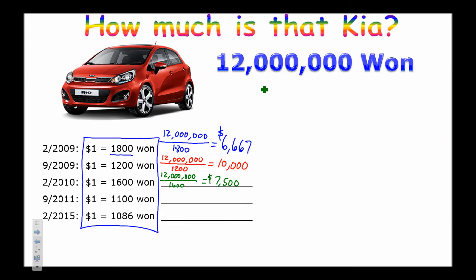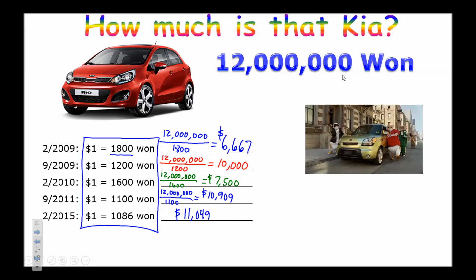In September 2011, dividing 12 million won by 1,100 won per dollar gives $10,909. In another period, 12 million divided by 1,086 gives $11,049. So the car always costs 12 million won, but the dollar price varies dramatically. The hamsters who bought their Kia in February 2009 are happy because at that point the dollar was strong and they paid fewer dollars.